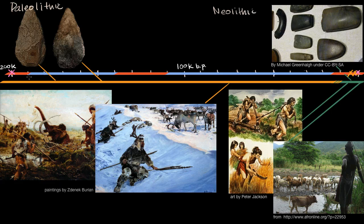On top of this timeline, I've also shown what's happening climatically on Earth at a very large scale. The blue periods are ice ages, and the reddish-orange periods are the periods in between ice ages. The last ice age ended roughly 15,000 years ago, and it began roughly 110,000 years ago.